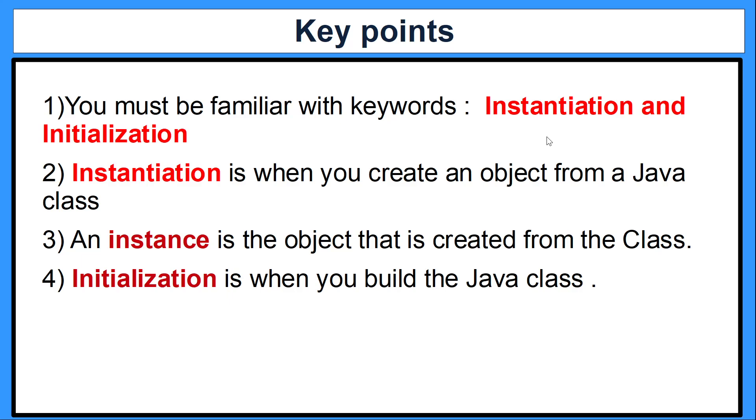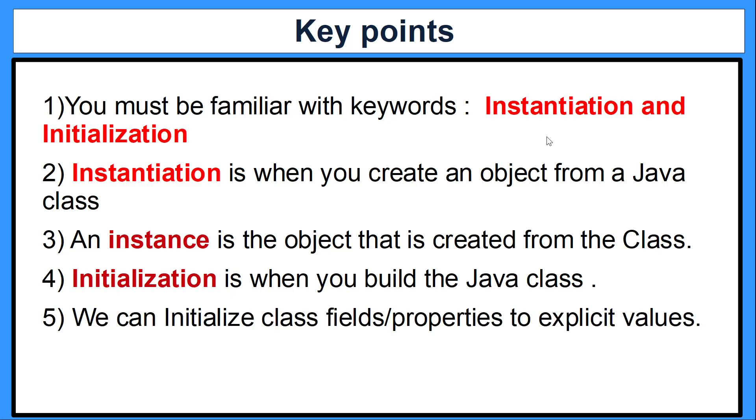And initialization is when you build that Java class. Now when you do initialization, we can create class fields and properties with explicit values, or we can declare those class fields to their default values. And we're going to be looking at those two examples in this video.